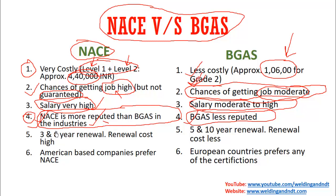Regarding renewal: for NACE, you will have to renew your certificate every three years, and there is a three-year and six-year renewal program. Whereas in BGAS, you renew at five years and then ten years. So NACE renewal is more frequent, making it a costlier affair — within three years you will have to renew your certificate.